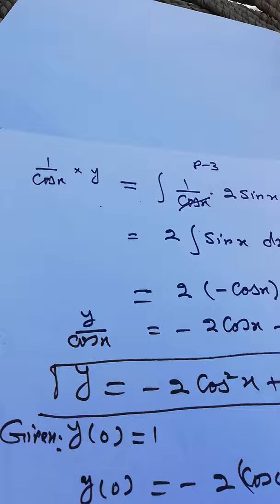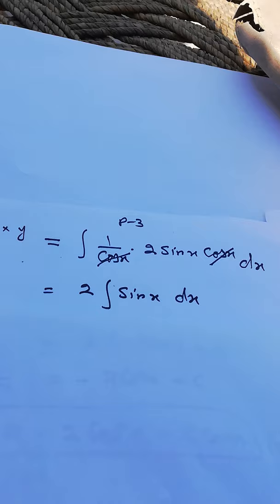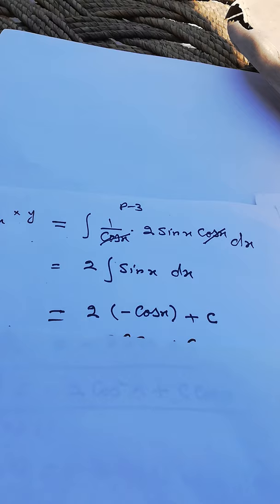Now we have 1/cos x times y equal to the integral of 1/cos x times sine 2x. Using the double angle formula, sine 2x equals 2 sine x cos x. Substituting and cancelling cos x from numerator and denominator, we are left with 2 times the integral of sine x dx.